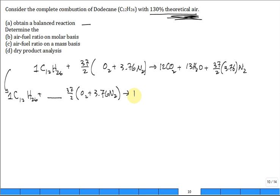Leave the 12 and the CO2 right there. Likewise, these hydrogens, leave the 13 and the H2O there. Leave a little room and a place for the oxygen. And leave a little room, 37/2, 3.76 N2. So this now is working to get my balanced reaction equation when I have 130% theoretical air.